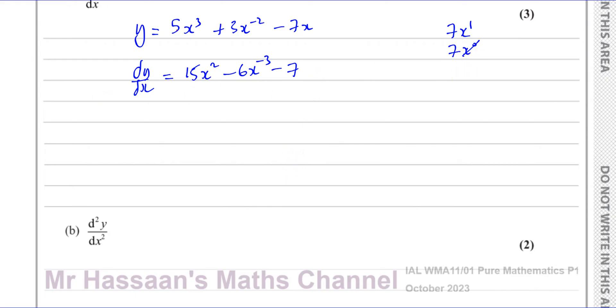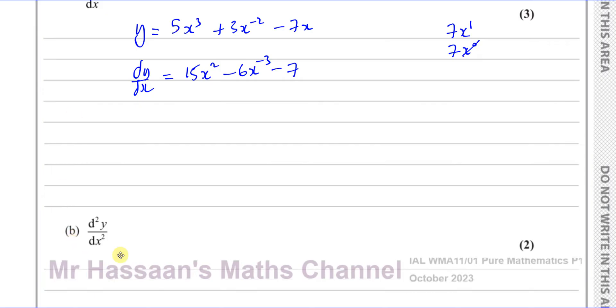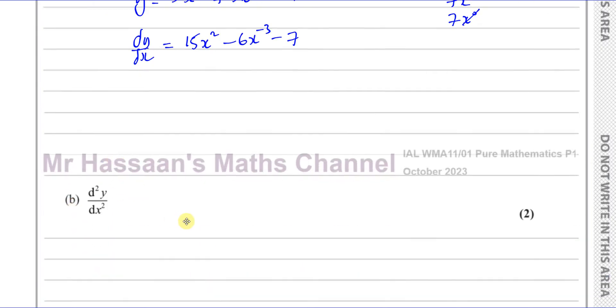Now the second thing they ask us to find is d squared y dx squared. What does that mean? It just means differentiate dy/dx. What it means is take dy/dx and differentiate with respect to x. That's why it's like this d squared y dx squared. That's why it has that kind of look to it. So we're going to take dy/dx, which we have already written in its form here, which we can differentiate easily now. And we've got to differentiate this one more time.